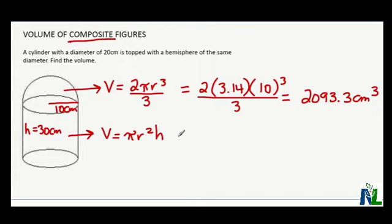For the cylinder on the bottom, π again—if you don't have a π button, use 3.14—times our radius, which is 10, squared, and multiplied by our height, which is 30.